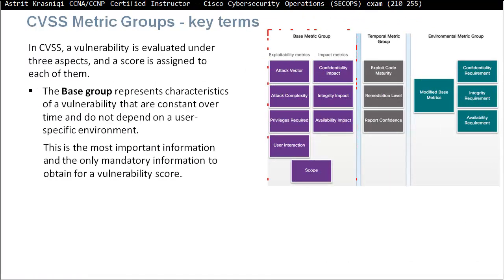CVSS has some metric groups which we have to know. Vulnerability is evaluated under three aspects and a score is assigned to each of them. The first group is called the base group, which represents characteristics of a vulnerability. They are constant over time and do not depend on user-specific environment. This is the most important and the only mandatory information to obtain the vulnerability score.